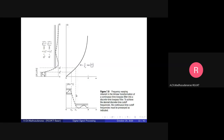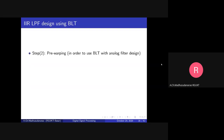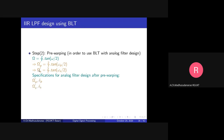I want to design the digital filter with these specifications, so I need to apply pre-warping. Step 2 will be pre-warping: capital Omega = 2/T × tan(omega/2). The small omega_p is converted to capital Omega_p-dash using this formula. Similarly, we do the same for the stopband cutoff frequency. The specifications for the analog filter design after pre-warping will be Omega_p-dash, delta_p, Omega_s-dash, and delta_s.